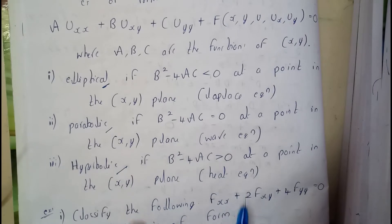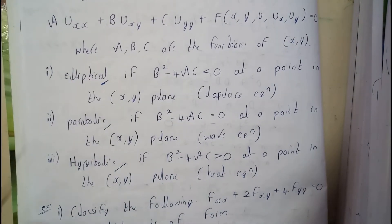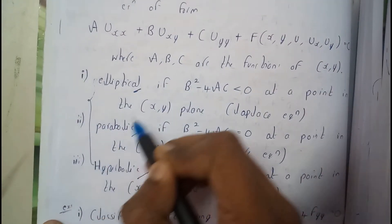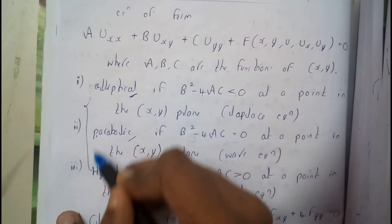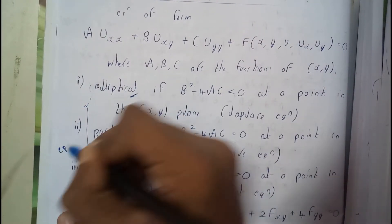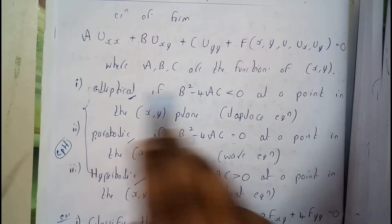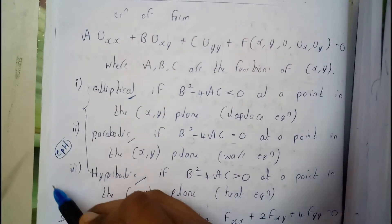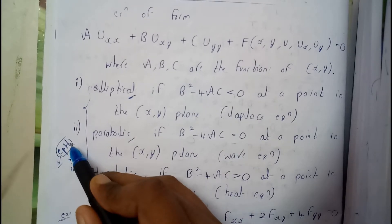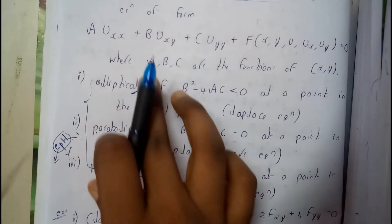I've made a mnemonic to remember this: Ishwar Prasad came to Hyderabad (EPH). E for ellipse (least value), P for parabola (equals), and H for hyperbola (greater value). I hope everyone is clear with all three classifications.